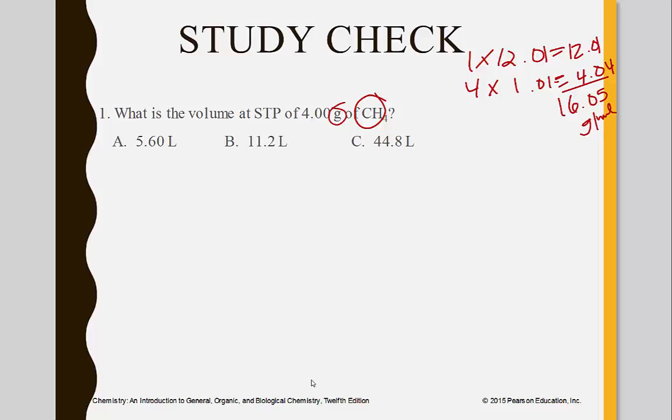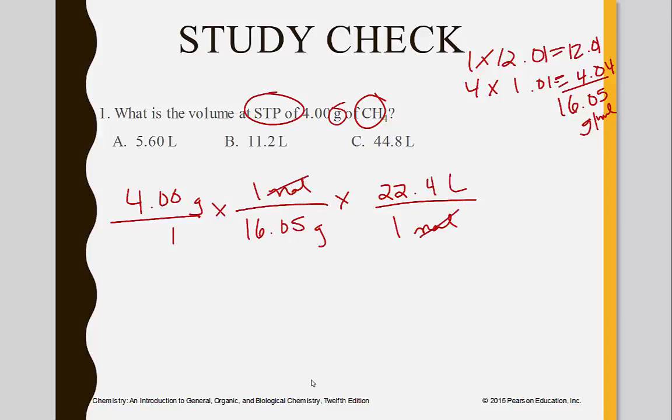Now we can use this as we did any other conversion going from grams to moles. 4.0 grams over 1. 16.05 grams, which is the molar mass of CH4, is equal to 1 mole. Now figure out the volume, remember STP. In every mole, there are 22.4 liters. We had to get it from grams to moles before we could use the 22.4. So 4 divided by 16.05 times 22.4 come out to be 5.60 liters.